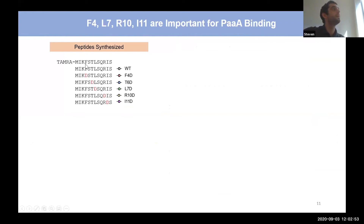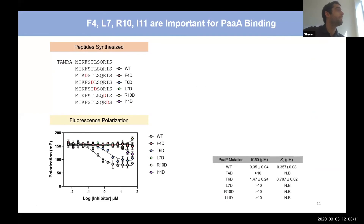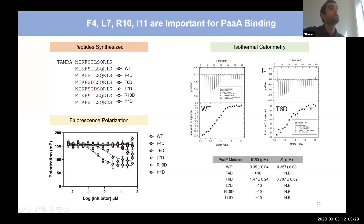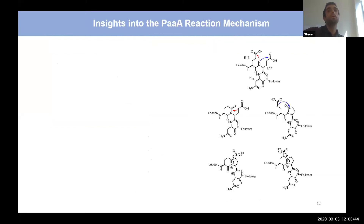To confirm whether F4, L7, R10, and I11 are important for binding, I synthesized peptides with aspartic acid mutations at each position, including a wild type, a wild-type TAMRA-labeled peptide, and a control aspartic acid mutation in the middle of the motif predicted not to be important for binding. In a competitive fluorescence polarization assay, wild type and the control T6D bind equivalently. However, we're not able to measure competitive binding with the other mutants, suggesting they can no longer bind. This is also confirmed by isothermal calorimetry, where wild type and T6D produce measurable KDs while the other mutants fail to produce binding curves.